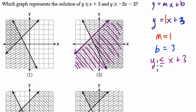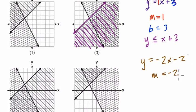Now we've got to find the next one. y is greater than or equal to negative 2x minus 2. So first, think of y equals negative 2x minus 2. Here, m is negative 2, our slope is negative 2. And b is negative as well, it's a negative y-intercept.